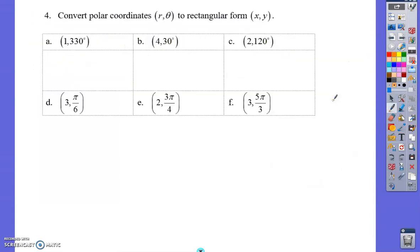Next, we're going to practice some more converting. You'll notice the first set are in degree mode, and we're going from polar to rectangular, which means we're going to use the following two formulas: x equals r cosine θ, and y equals r sine θ.